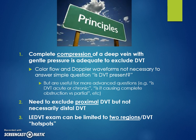Complete compression of the deep vein with gentle pressure is adequate to exclude DVT. To answer whether a DVT is present or not, all we need to do is compress the vein — we don't need color flow or Doppler waveform techniques just to answer that simple question. Those techniques are beneficial when answering more advanced questions, like whether the DVT is acute or chronic, or causing complete versus partial obstruction, but those are best reserved for formal studies.